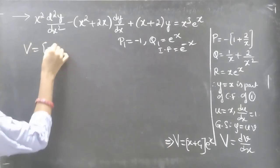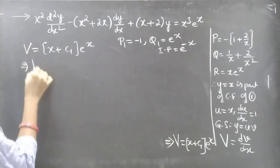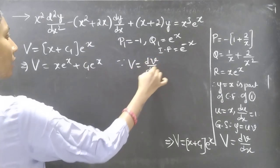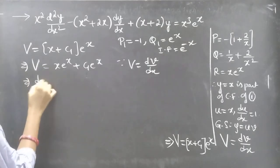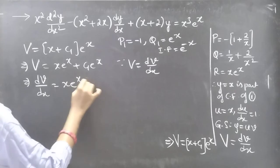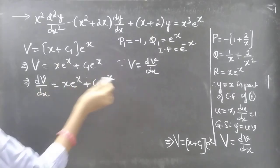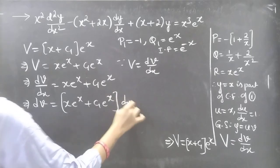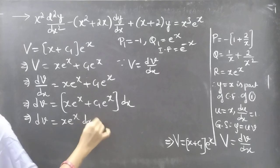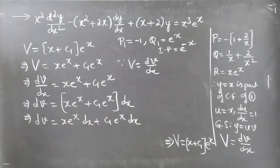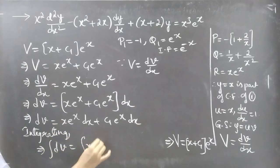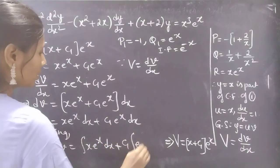We can write capital V equals x·eˣ plus c₁·eˣ. Since capital V equals dv/dx, we replace capital V with d(small v)/dx. Taking dx to the right side gives dv equals (x·eˣ plus c₁·eˣ) dx, or dv equals x·eˣ dx plus c₁·eˣ dx. The variables are now separable and we can perform integration.